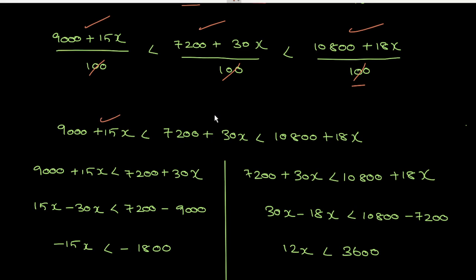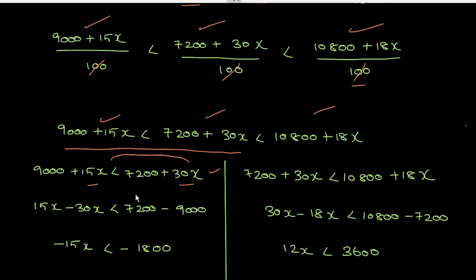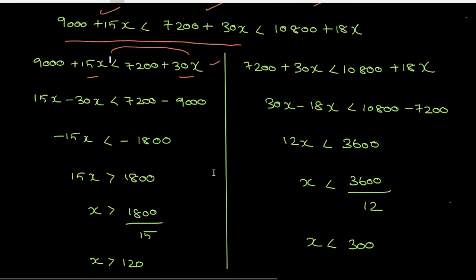So 9000 plus 15x is less than 7200 plus 30x. Rearranging: 15x minus 30x gives minus 15x, less than 7200 minus 9000, which is minus 1800. Since we have a negative on the left, we multiply both sides by minus 1, which changes the inequality sign. So x is greater than 120.